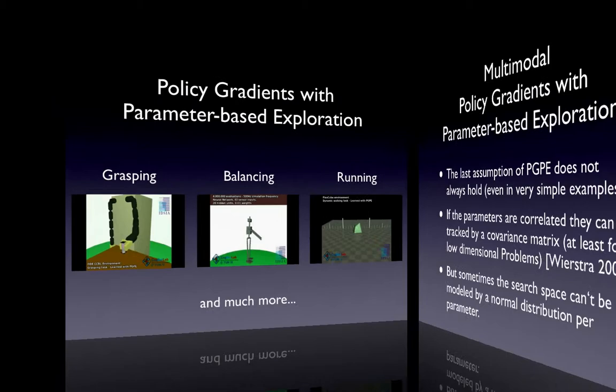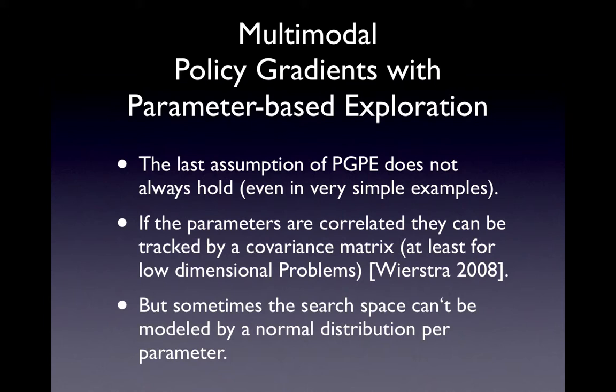Nevertheless, PGPE assumes that searching with a normal distribution per parameter leads to a good optimum, but this is not always true. If the parameters are correlated, a covariance matrix can be used. But if the search space is multimodal, with several optima leading the gradient in different directions, convergence can get very slow.